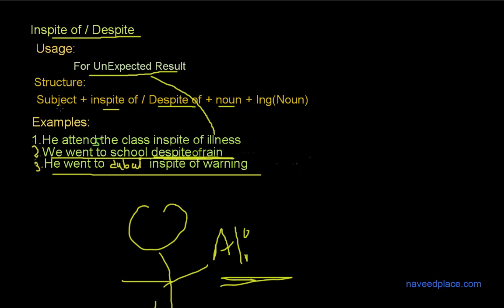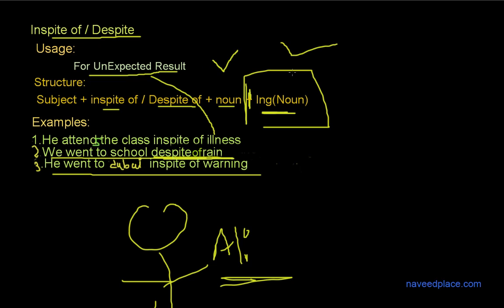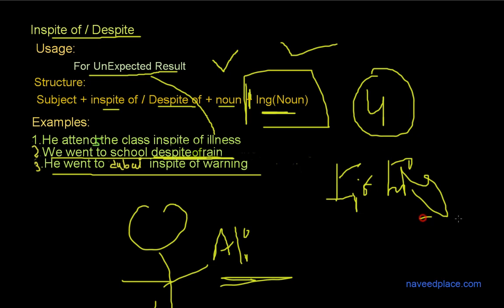We have two structures: Subject + in spite of/despite + noun, or Subject + in spite of/despite + gerund (Jared noun). A gerund is a fourth form of a word that ends like a noun. For example, 'I like fishing' — 'fishing' is the gerund. It is the fourth form of the verb but functions as a noun.